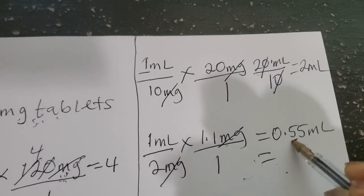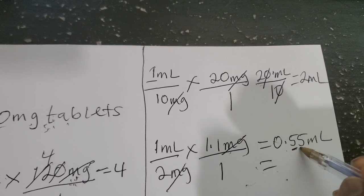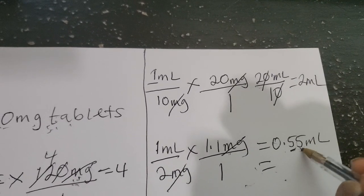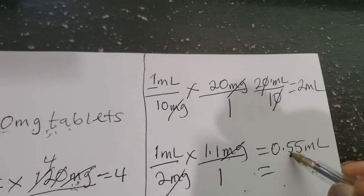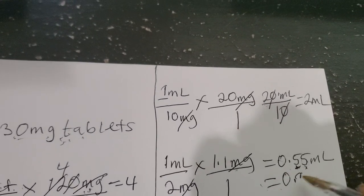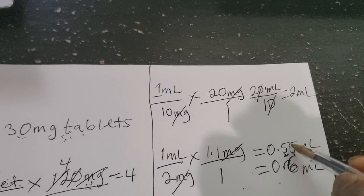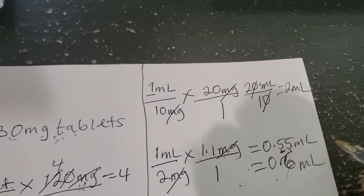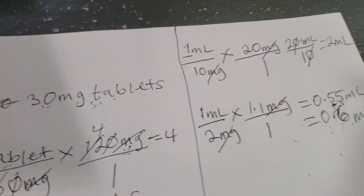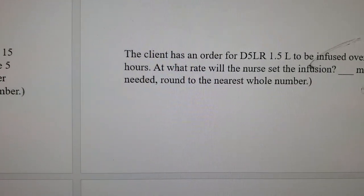1.1 divided by 2 gives 0.55 mL. It says round to the nearest tenth. The first digit after the decimal is the tenths place; the next is the hundredths place. The digit in the hundredths place is 5 — if it's 5 or more, you round up the tenths digit by one. So the answer becomes 0.6 mL, rounded to the tenths place, which means we discard any digits after the tenths digit.